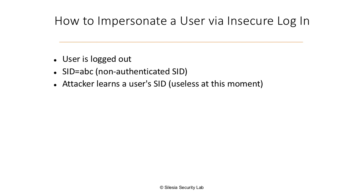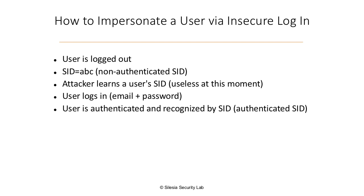Next, the user logs in to the web application — providing email and password — and after that the user is authenticated and recognized by session ID. This is now an authenticated session ID. The user has been authenticated after providing email and password, and now the only piece of data used by the web application to recognize the user is the session ID. This is how web applications work. Now we are talking about an authenticated session ID because the user is authenticated.